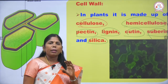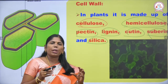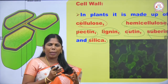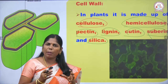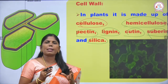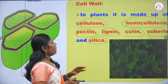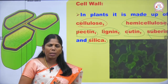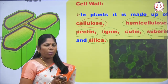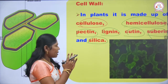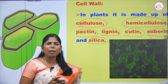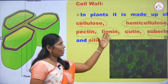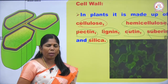The cell wall is differentiated into three layers: the middle lamella, the primary wall, and the secondary wall. In the primary wall, there is more hemicellulose and less cellulose. In the secondary wall, there is more cellulose and less hemicellulose.